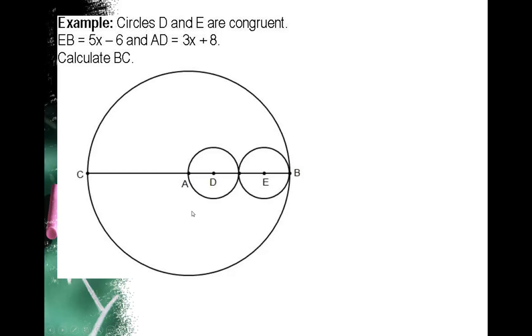EB is 5x-6 and AD is 3x+8. What is important about those two? Well, EB is the radius of circle E and AD is the radius of circle D. Since they're congruent circles, that means their radii must be congruent. So these two segments must be congruent, so I can set their lengths equal.